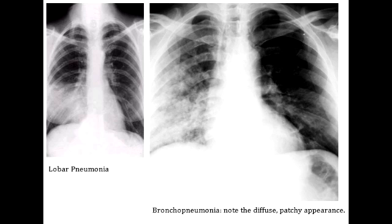What is bronchopneumonia? Bronchopneumonia is a type of pneumonia in which you see acute inflammatory infiltrates from the bronchioles into the adjacent alveoli. This type of pneumonia has a patchy distribution which involves one or more lobes.